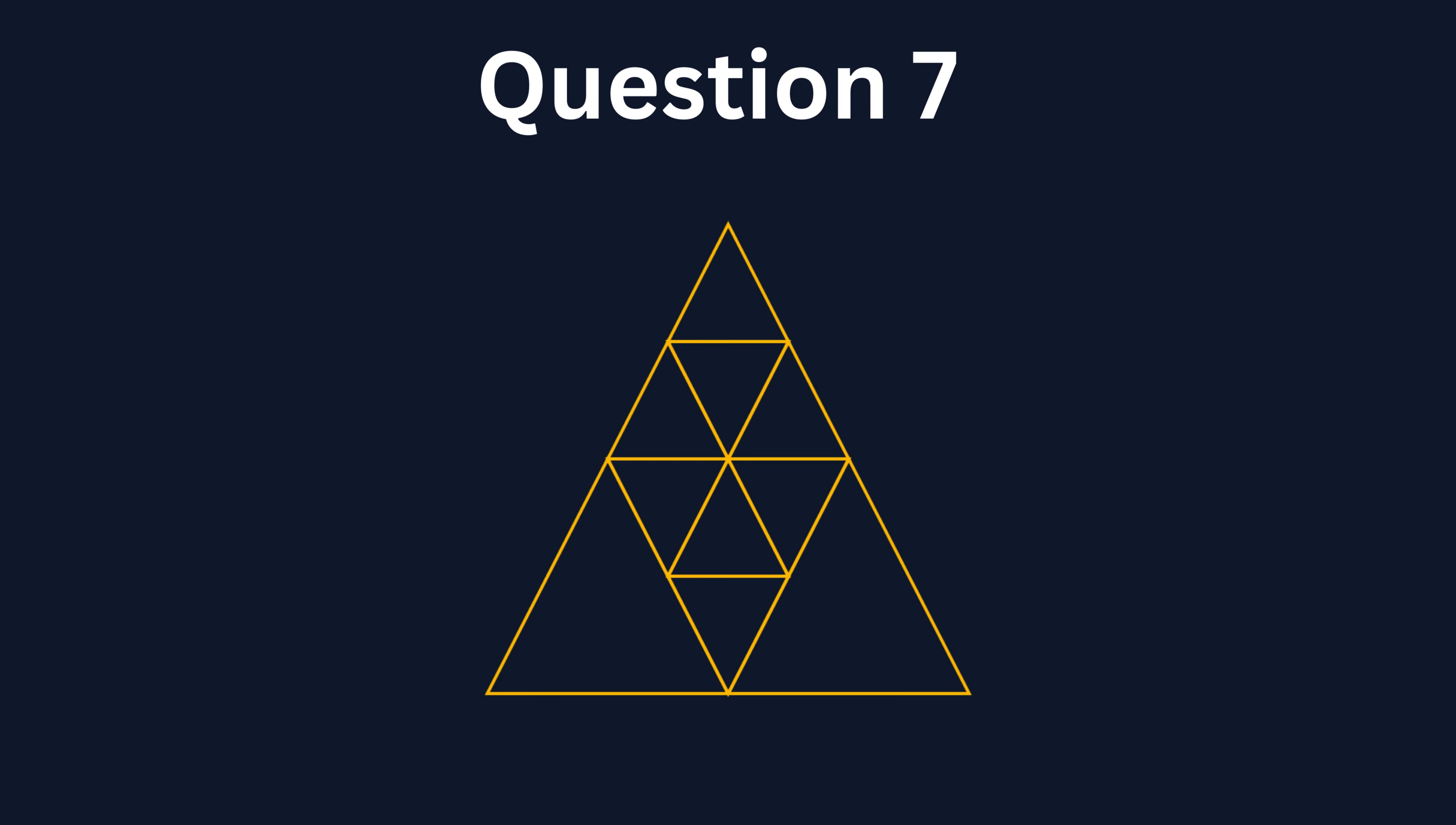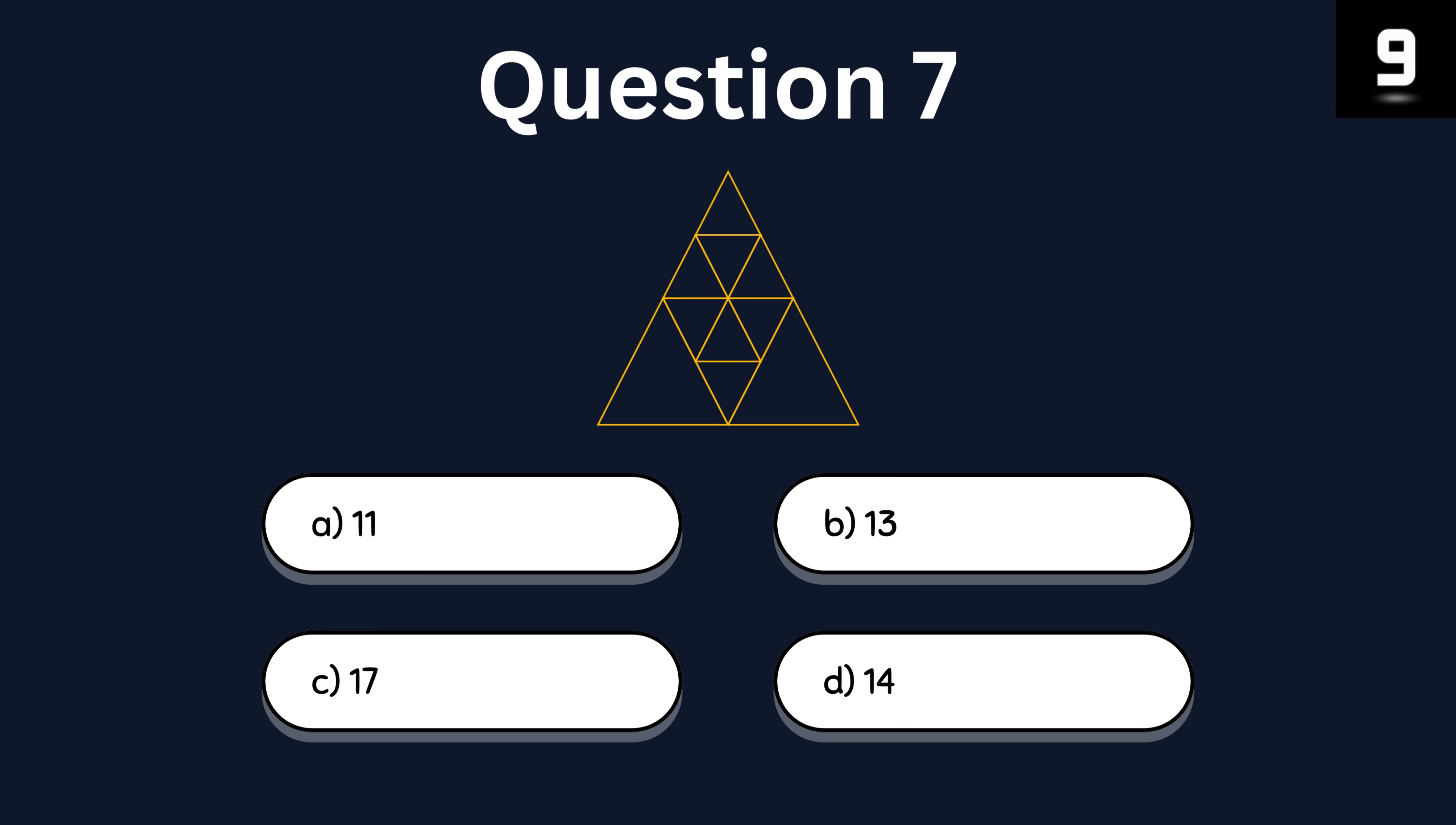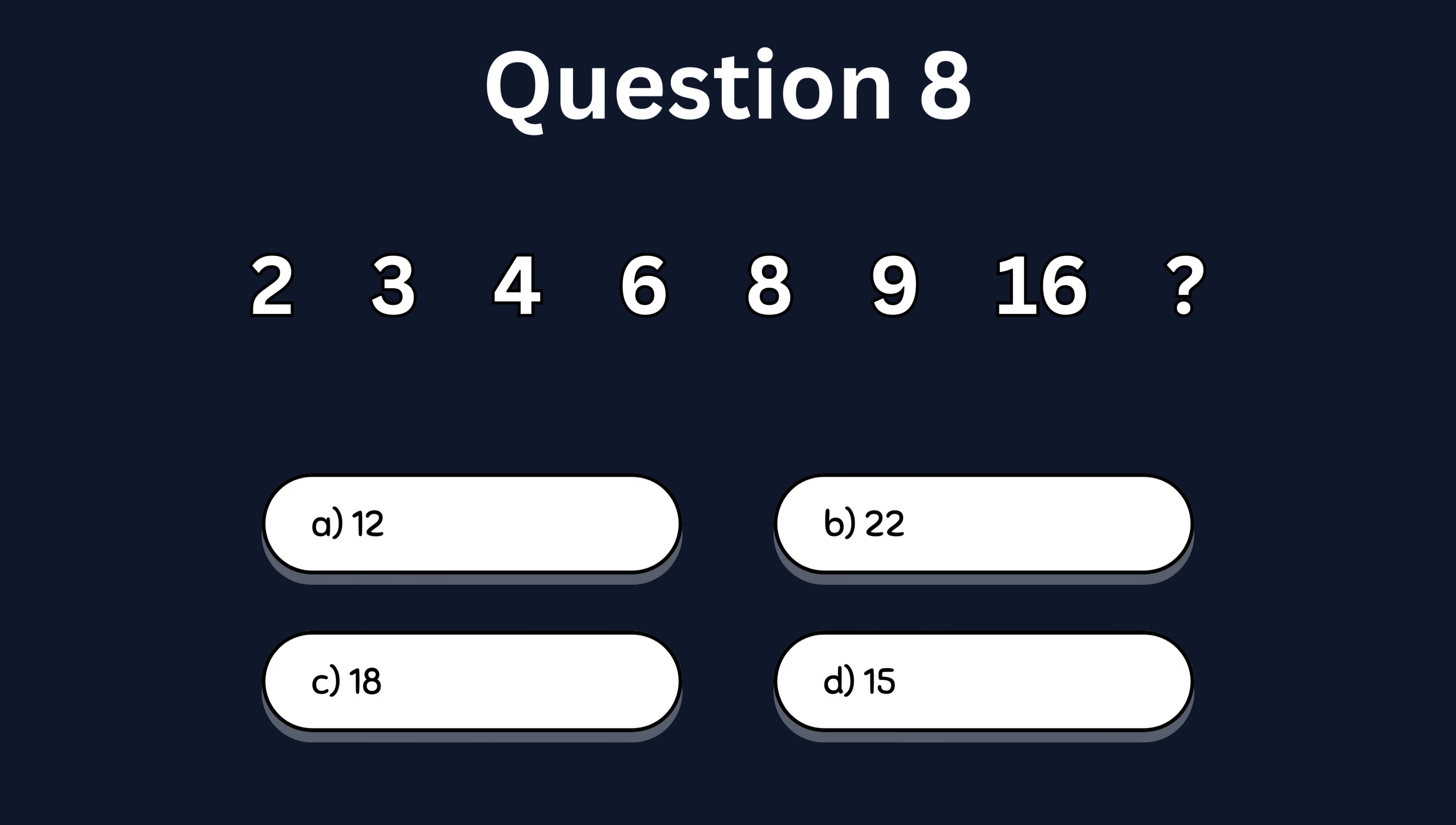Question 7. How many triangles are there in this picture? The correct answer is 13. Question 8. Take a look at this sequence. What number comes next?